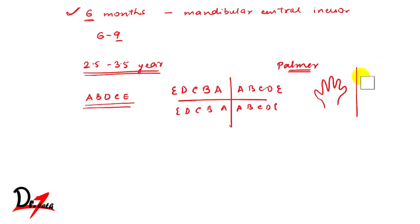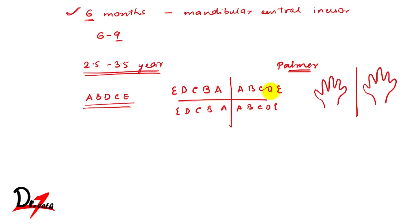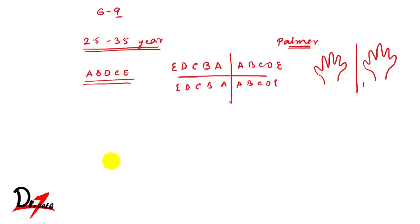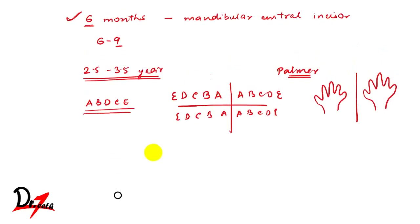So I'll draw it: this is the first deciduous tooth — the central incisor, this is the lateral incisor, this is the canine, this is the first molar, and this is the second molar. In the deciduous dentition we do not have a premolar — remember that. So the sequence is A, B, D, C, E.